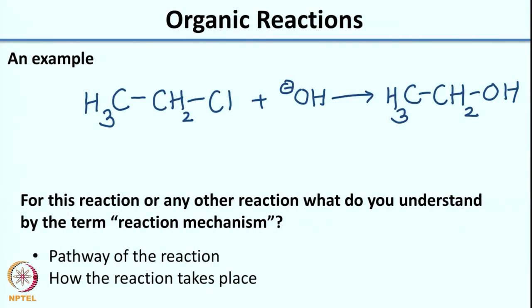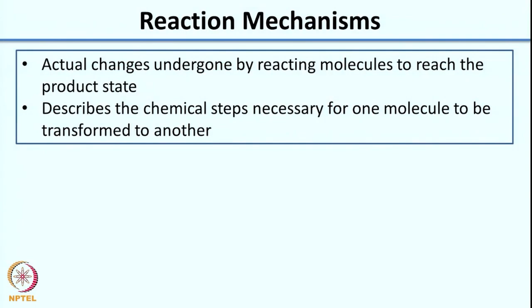A reaction mechanism also tells you how the reaction takes place. To give a little more detail: one can define a reaction mechanism as the actual changes undergone by reacting molecules to reach the product state, or the chemical steps necessary for one molecule to be transformed to another. Essentially, if you think of going from destination A to destination B, the reaction mechanism is the road, your reactants and product are the two destinations.